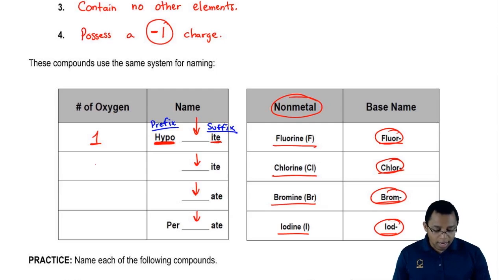If we possess two oxygens, we drop the prefix hypo, but we keep the suffix '-ite'. Depending on which halogen you have, you plug in that base name.